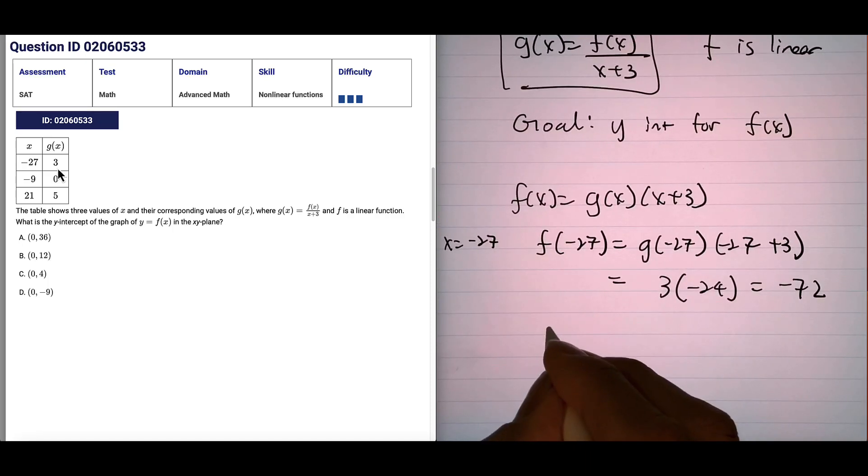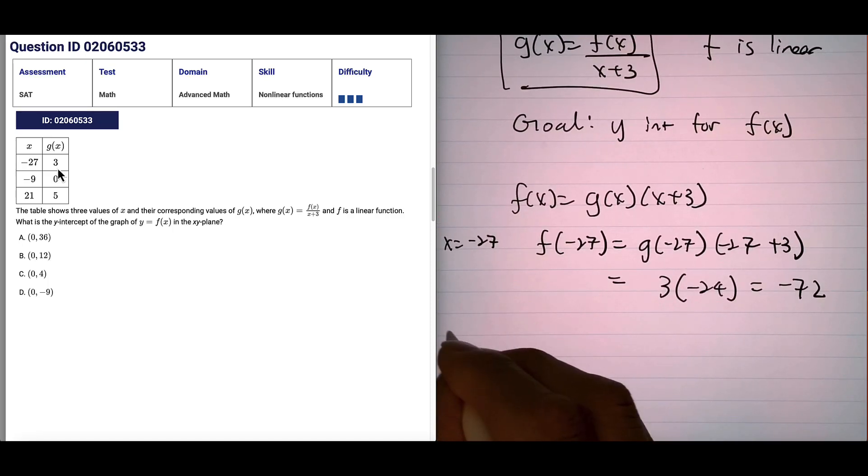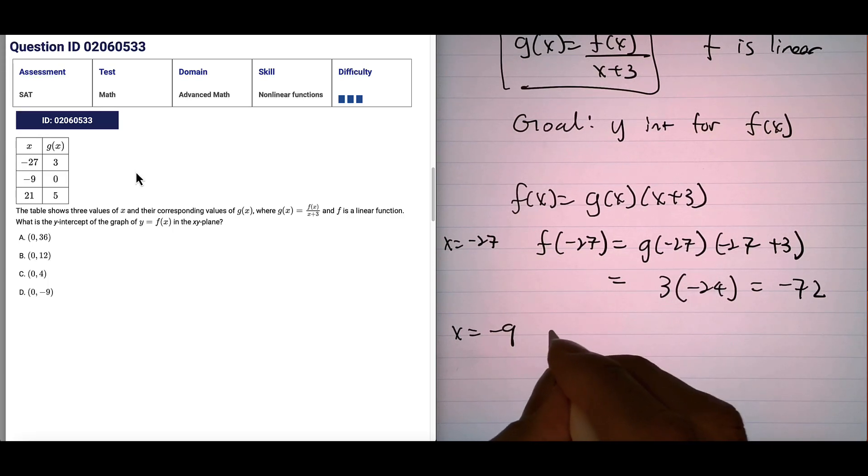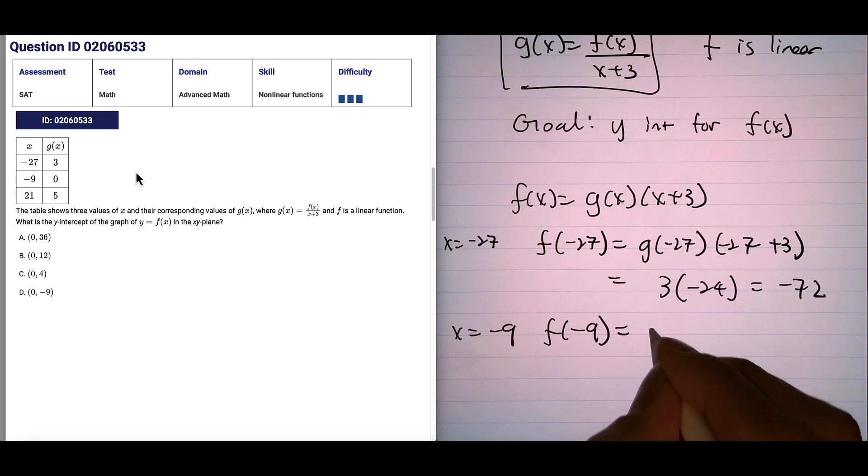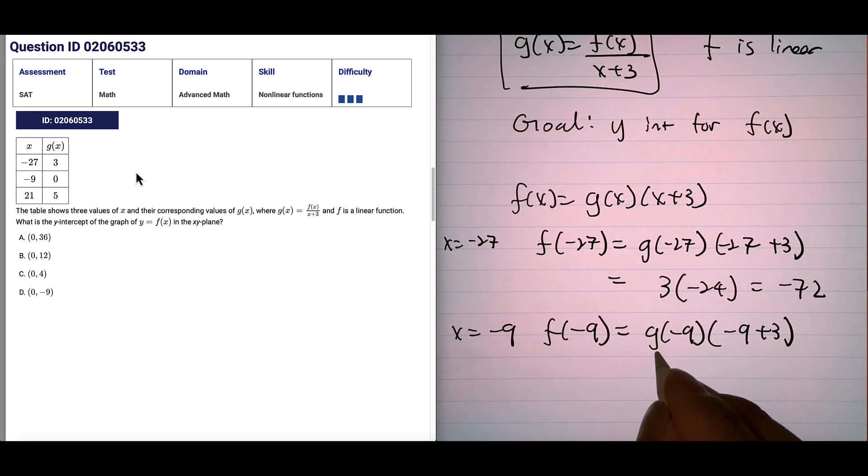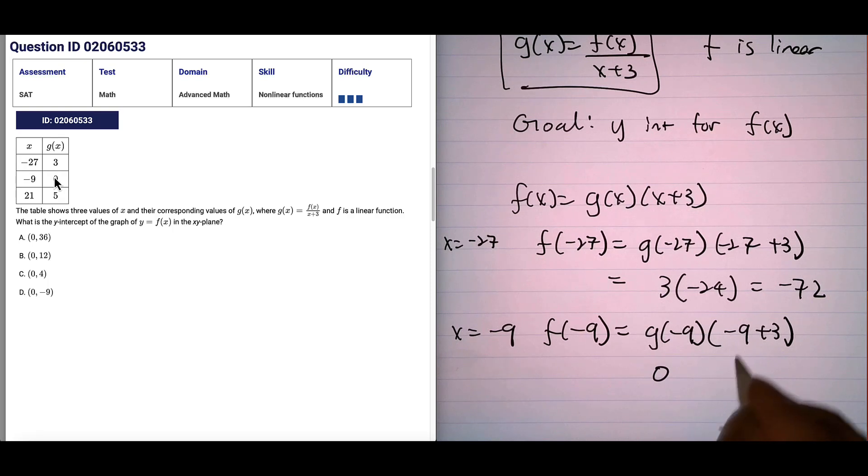Now if you look at the second row and set x equals negative 9, we're going to get 0. So f of negative 9 is equal to g of negative 9 times parenthesis open negative 9 plus 3. So g of negative 9 is 0, so we don't really need anything. Everything will just become 0.